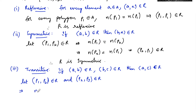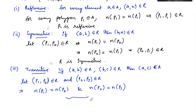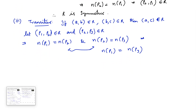Since (p1, p2) belongs to R, the number of sides in polygon p1 is the same as the number of sides in polygon p2. Since (p2, p3) belongs to R, the number of sides in polygon p2 equals the number of sides in polygon p3. From both, n(p1) = n(p2) and n(p2) = n(p3), which implies n(p1) = n(p3). Therefore relation R is transitive.